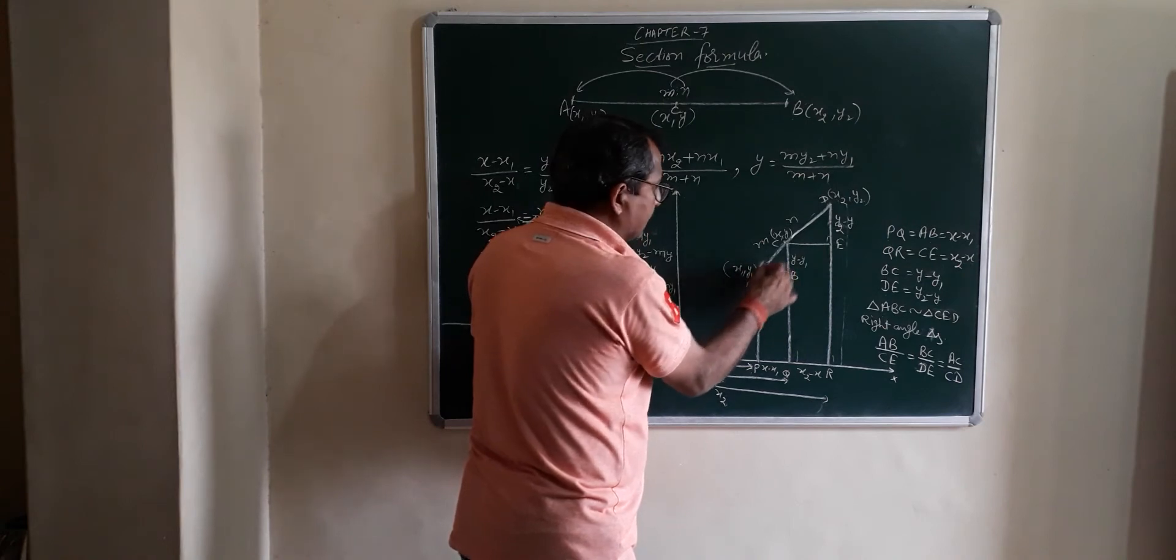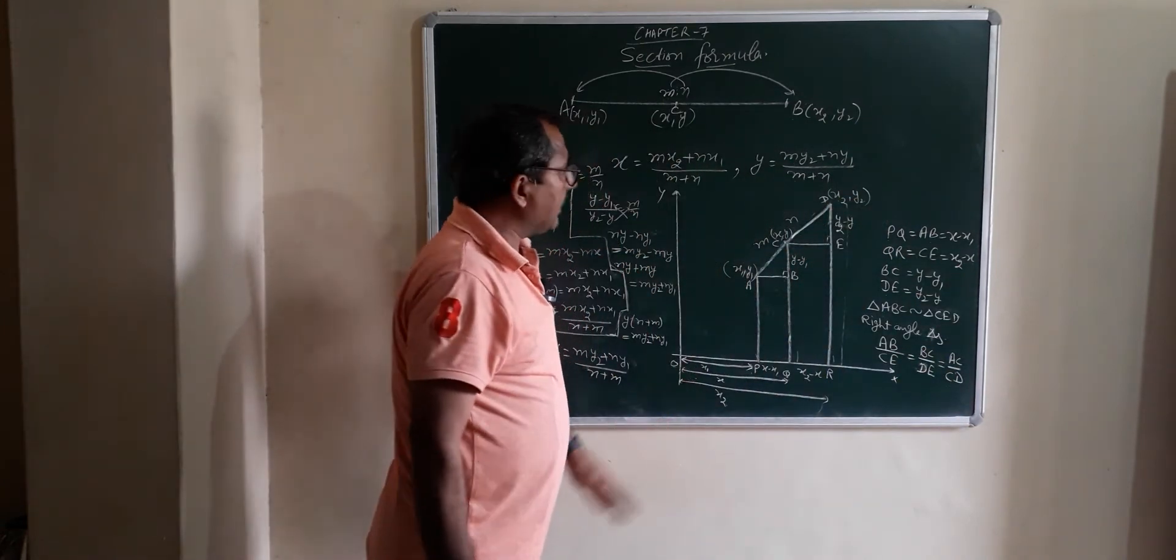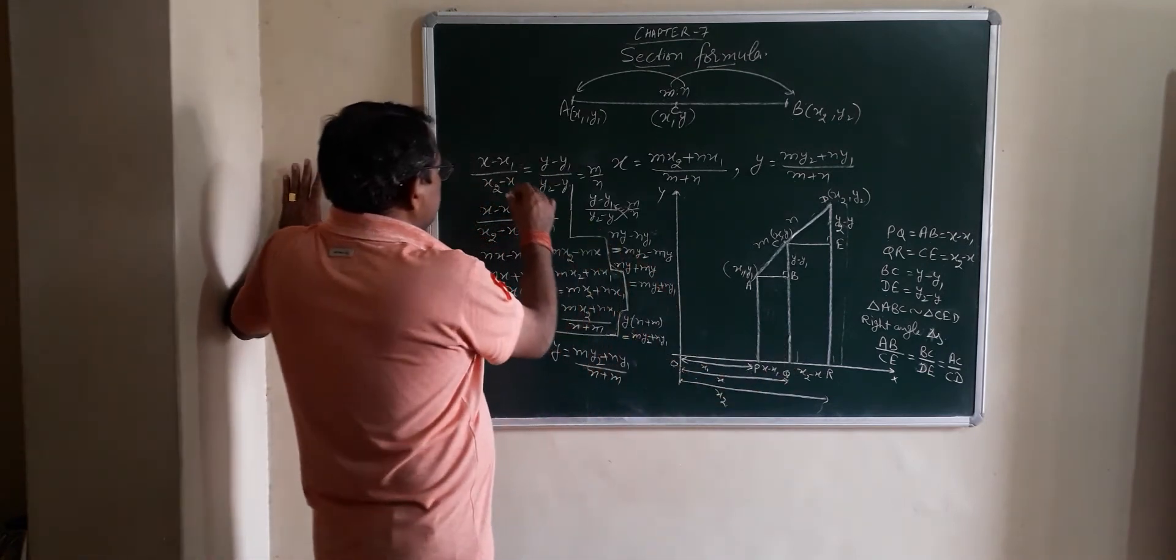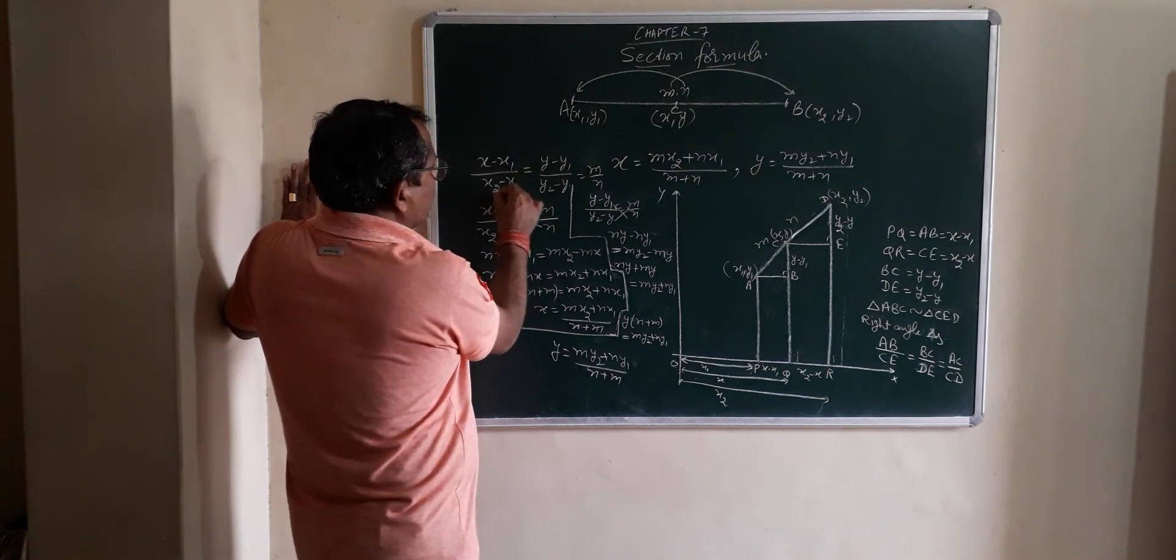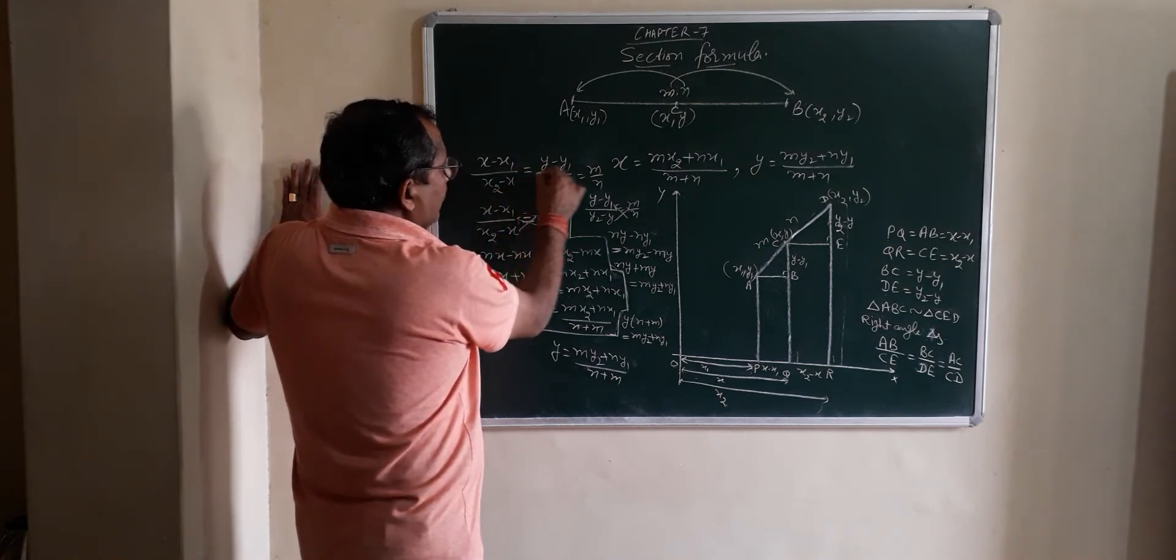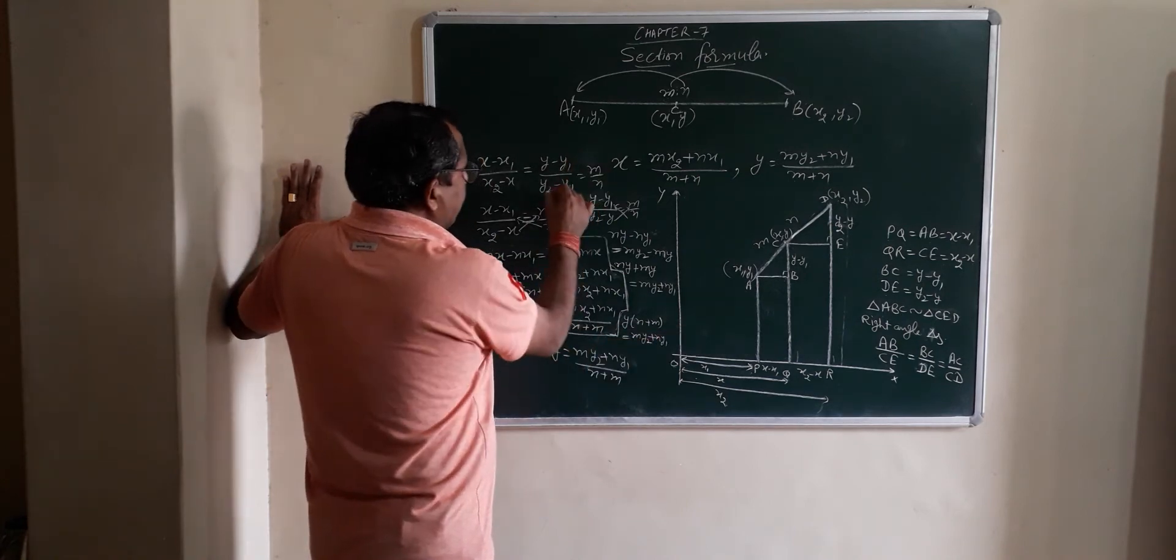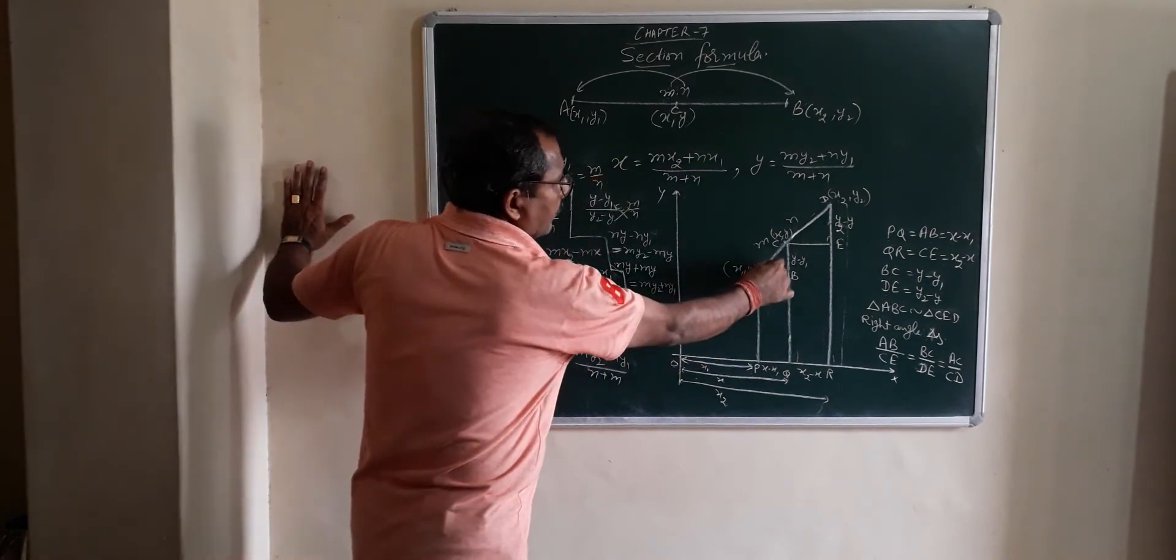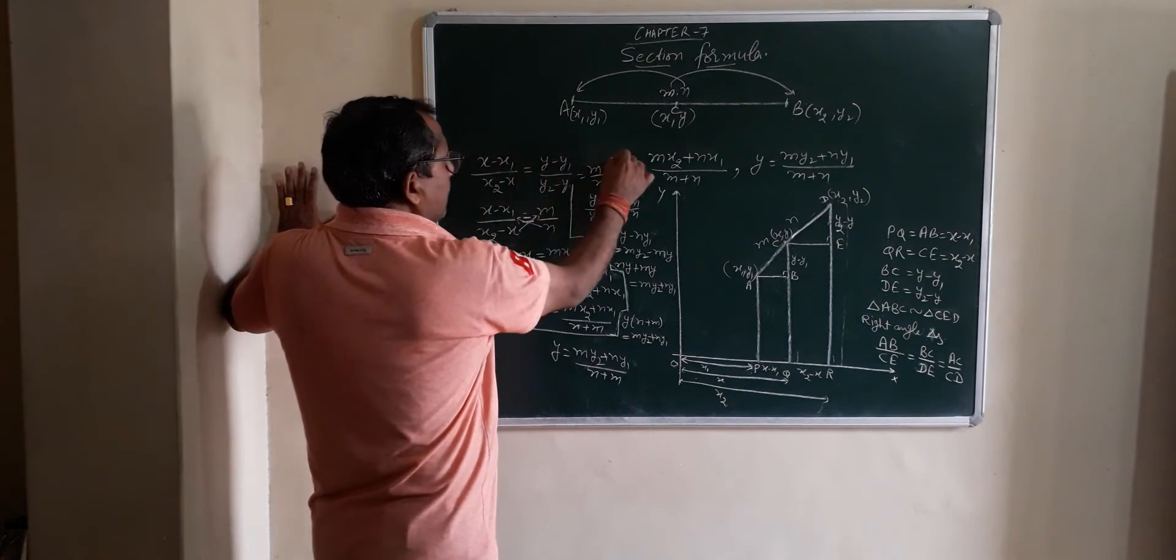Triangle ABC and CED they are similar. When similar triangles, they are proportional. AB upon CE, perpendicular BC upon DE, hypotenuse AC upon CD. Now put the values. AB means X minus X1 upon CE X2 minus X is equal to BC Y minus Y1 upon DE Y2 minus Y is equal to AC M or CD N.